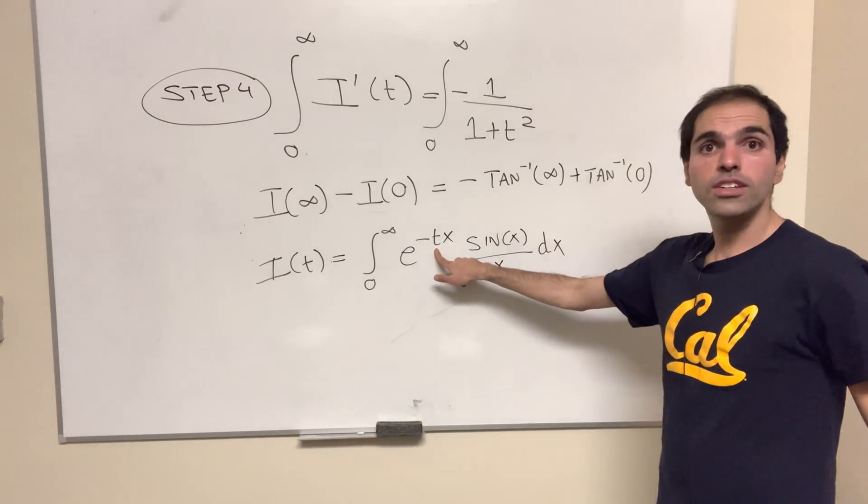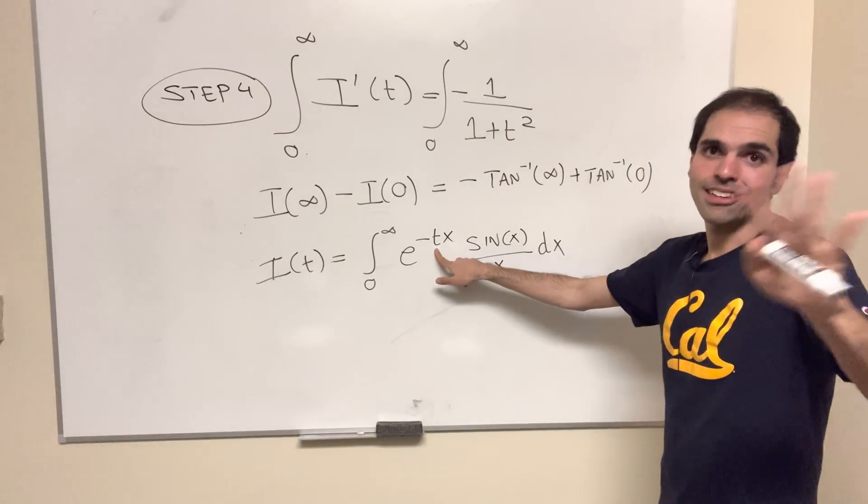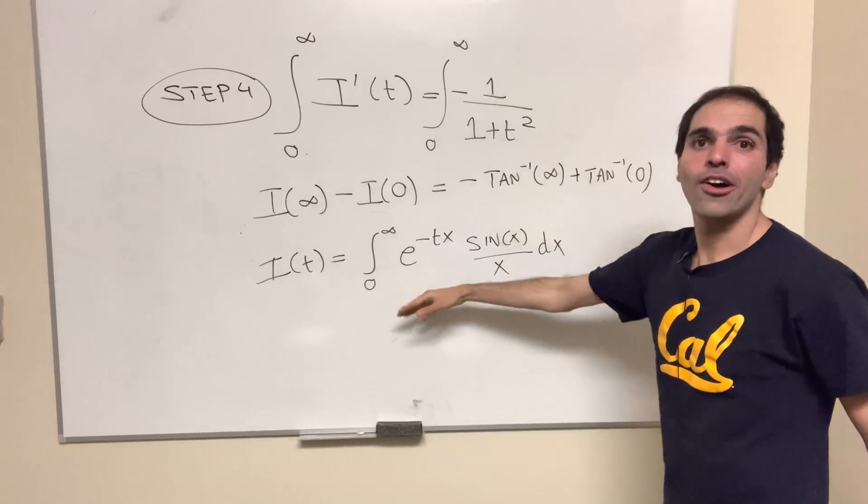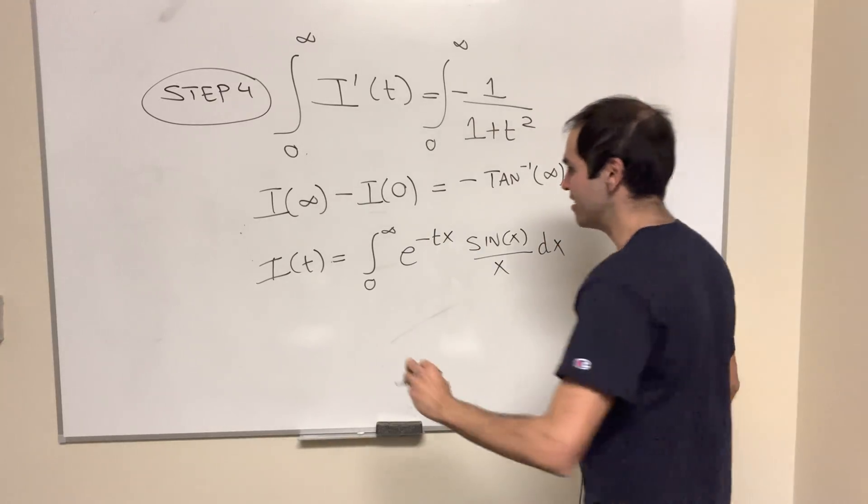But if we let t go to infinity here, again, dominated convergence, this becomes 0, so at least intuitively, i(∞) is 0.